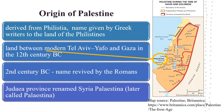Palestine is derived from Philistia, which is the name given by Greek writers to the land of the Philistines, who occupied a small pocket of land between modern Tel Aviv, Yafo and Gaza in the 12th century BC. The name was later revived by the Romans in the 2nd century. The province of Judea was renamed Syria-Palestinia, later simply called Palestine.